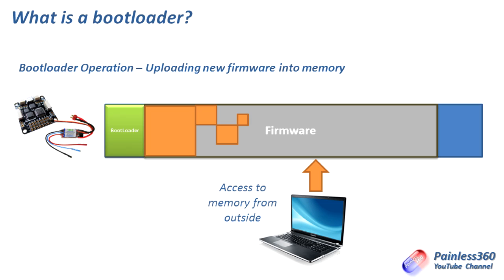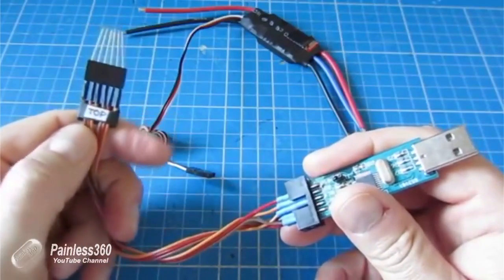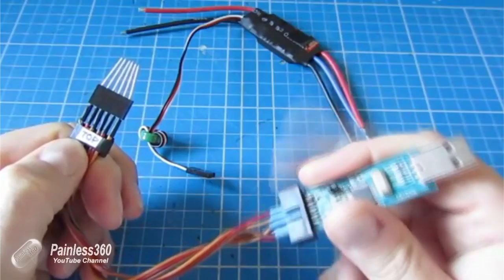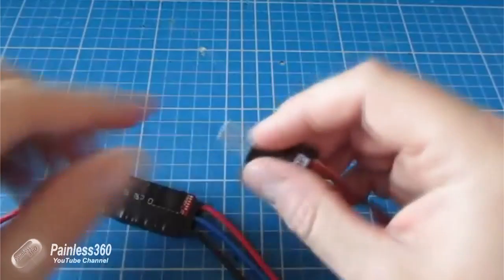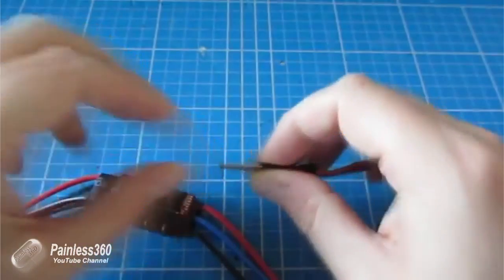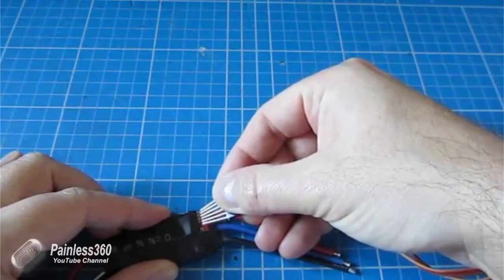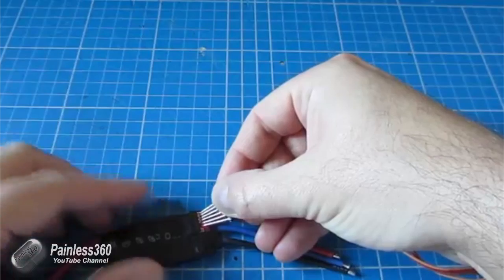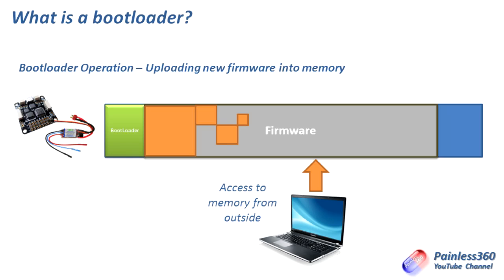Not all devices have a bootloader on them. For those that don't have a bootloader, the way you have to update them is using special cables with multiple pins that connect directly to the CPU itself or directly to special pins on the edge of the board. What you're doing when flashing firmware in those instances is directly communicating with a memory chip on the device, and directly writing the zeros and ones onto that memory chip in the location that the board will run from next time it boots.